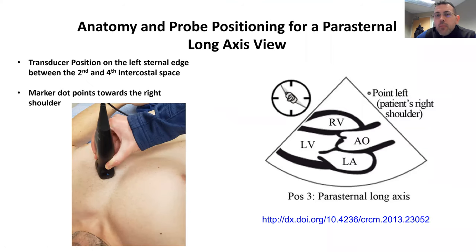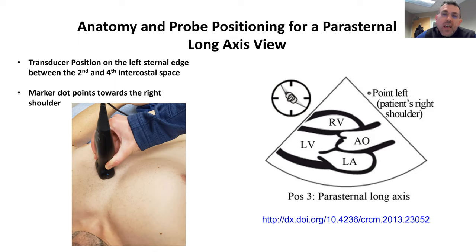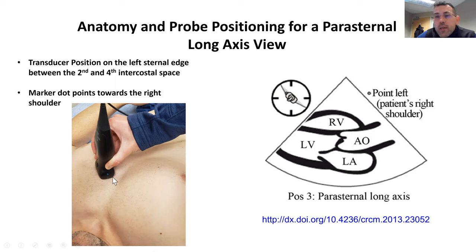First is anatomy and probe positioning for a parasternal long axis view. We want the transducer positioned on the left side of the chest, on the left sternal edge, between the second and the fourth intercostal space. Here we show on the left side of the chest, here's the sternum, and this is approximately somewhere between the second and the fourth intercostal space. We want the marker pointing towards the right shoulder.